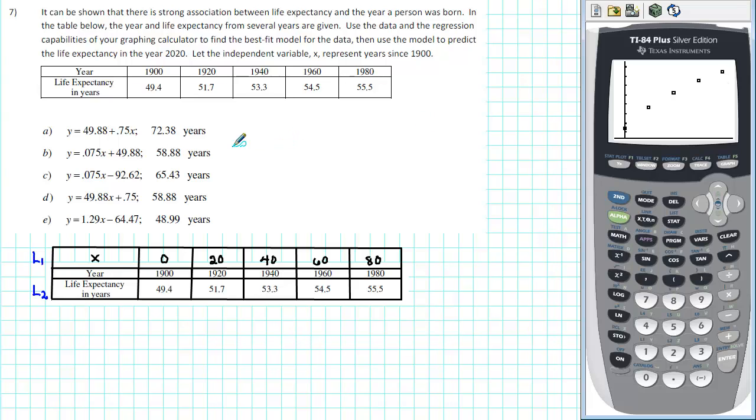However, we see from our answer choices that the author intends for us to use a linear model. So we're going to assume that the life expectancy has been increasing at a fairly constant rate and find the best fit linear model for this set of data.